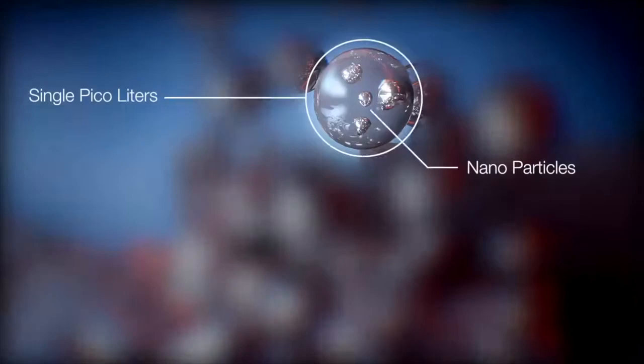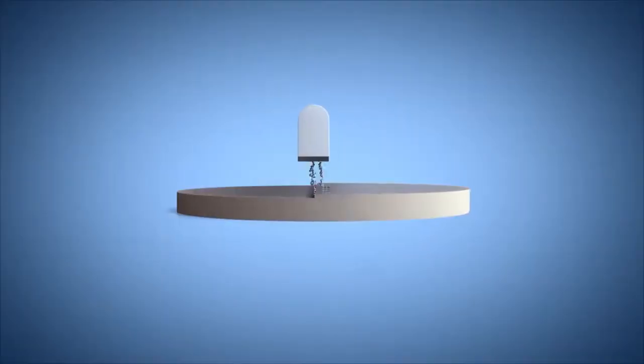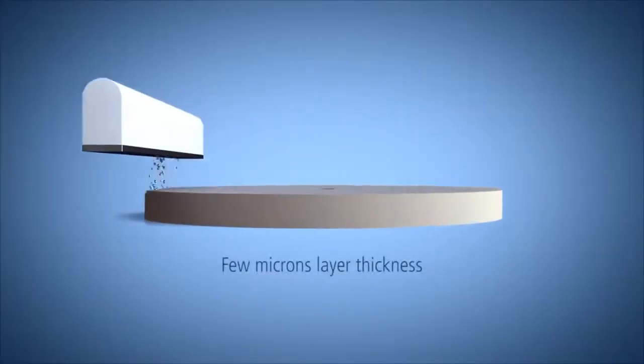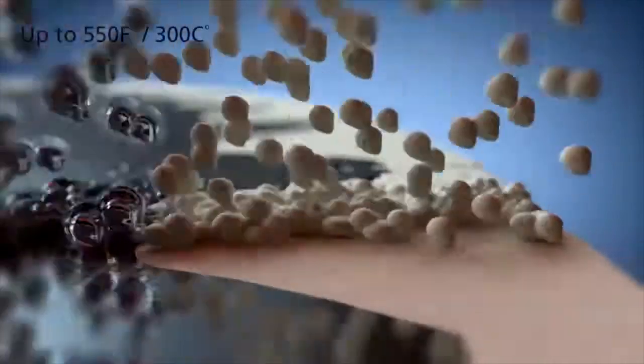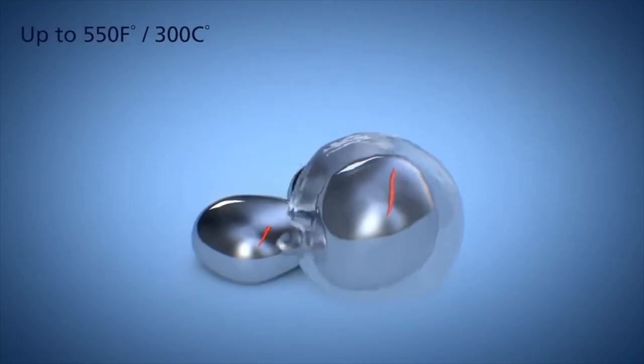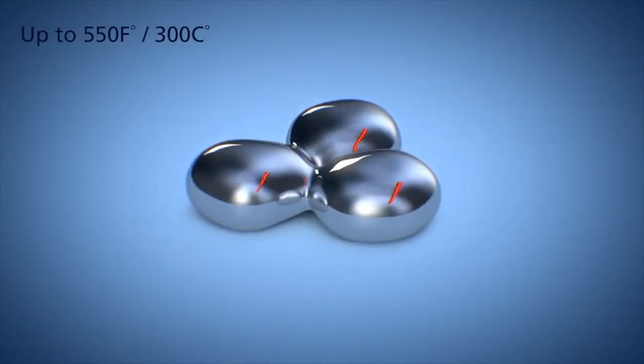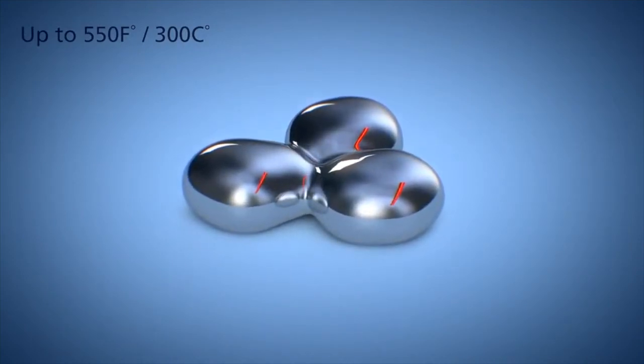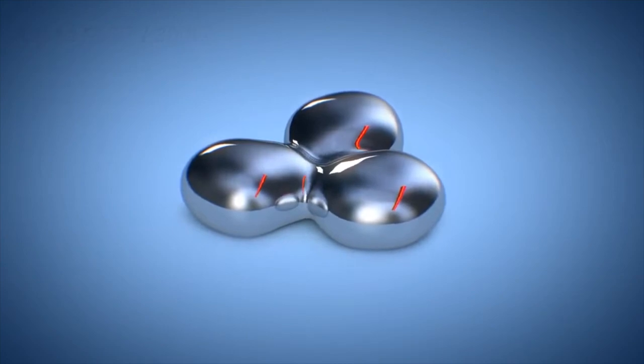The metal liquid formula and the support material are jetted from many thousands of printing nozzles simultaneously in a process that's up to five times faster than laser metal printers. Temperature of up to 550 degrees Fahrenheit or 300 degrees Celsius causes the liquid jacket around the metal nanoparticles to evaporate, allowing the stochastic metal particles to achieve virtually the same metallurgy and density as traditionally made metal parts.